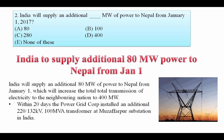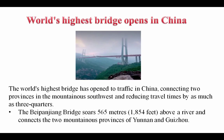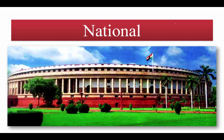Question: India will supply an additional how many megawatt of power to Nepal from 1st January 2017? India will supply an additional 80 megawatt of power to Nepal from 1st January, increasing the total electricity transmission to the neighboring nation to 400 megawatt. This supply will be done through the Muzzaffarpur substation in India. Also, the world's highest bridge has opened to traffic in China, connecting two provinces in the mountainous southwest and reducing travel time by as much as three quarters.